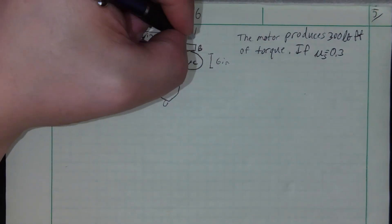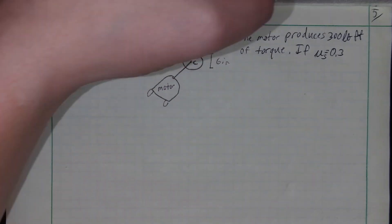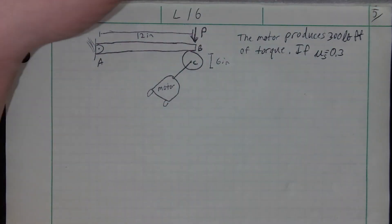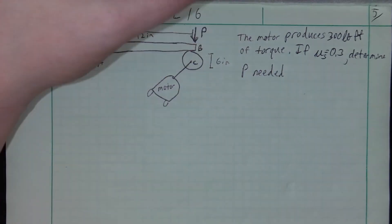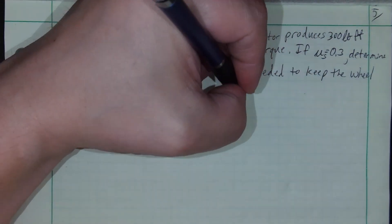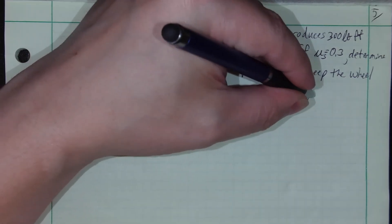We're going to apply a force P out here at point B, a push force. Determine P needed, the push force needed to keep the wheel from moving.